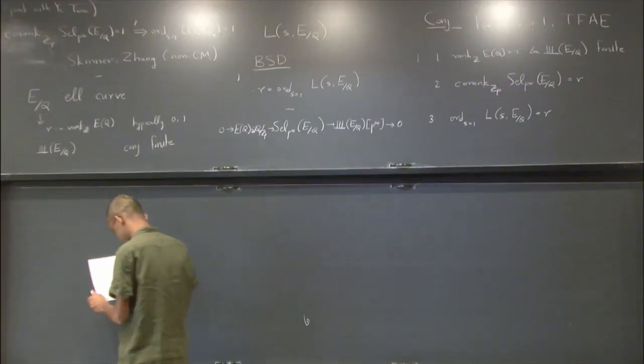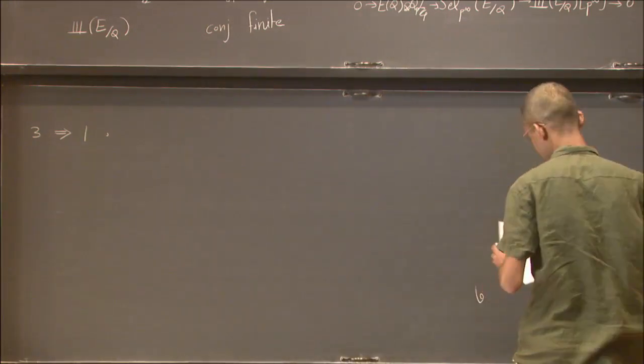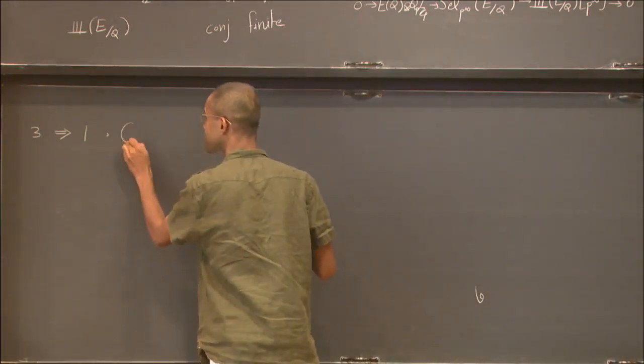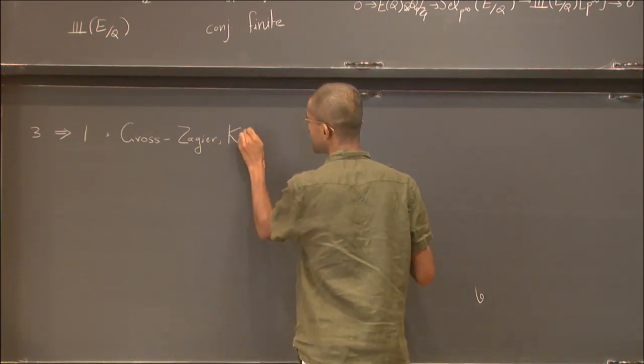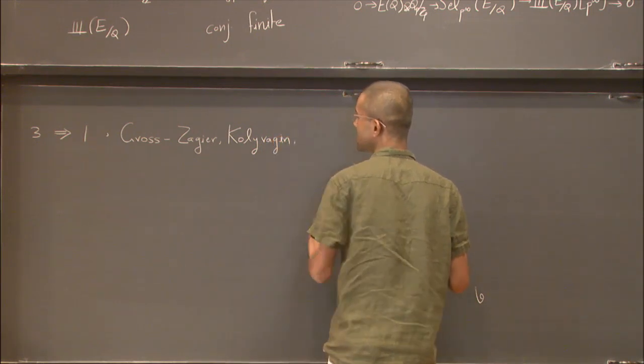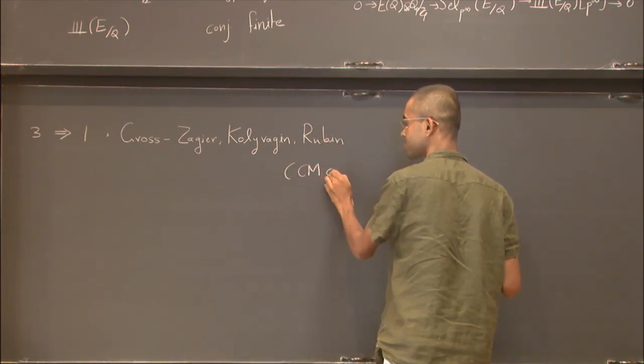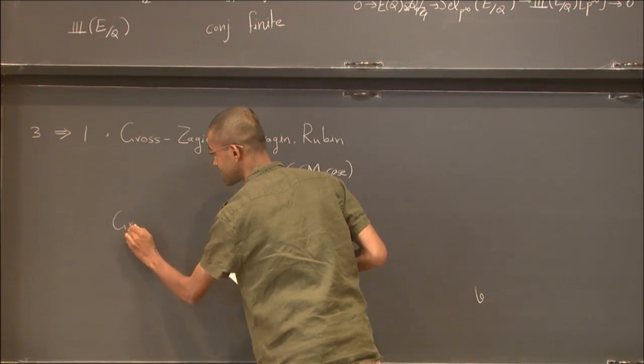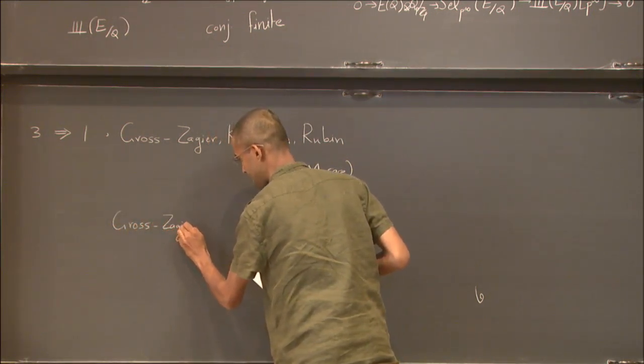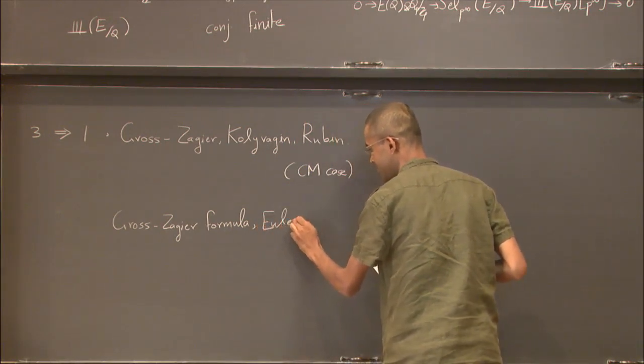So 3 implies 1 was resulting in the title. So this was also say Rubin. This is in the CM case, we'll say CM case very soon. And just to put some words here without saying something, so this may be the key ingredients here were so this is the Zagier formula and sort of Euler system of Heegner points. In this case, it's a sum.